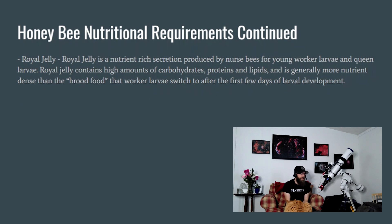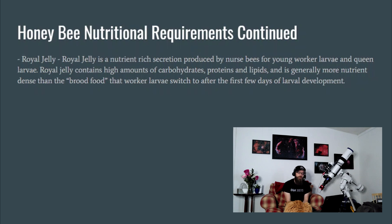Lastly, we have royal jelly. Royal jelly is a nutrient-rich secretion produced by nurse bees for young worker larvae and queen larvae. Royal jelly contains high amounts of carbohydrates, proteins, and lipids, and is generally more nutrient-dense than the brood food that worker larvae are switched to after the first few days of larval development.